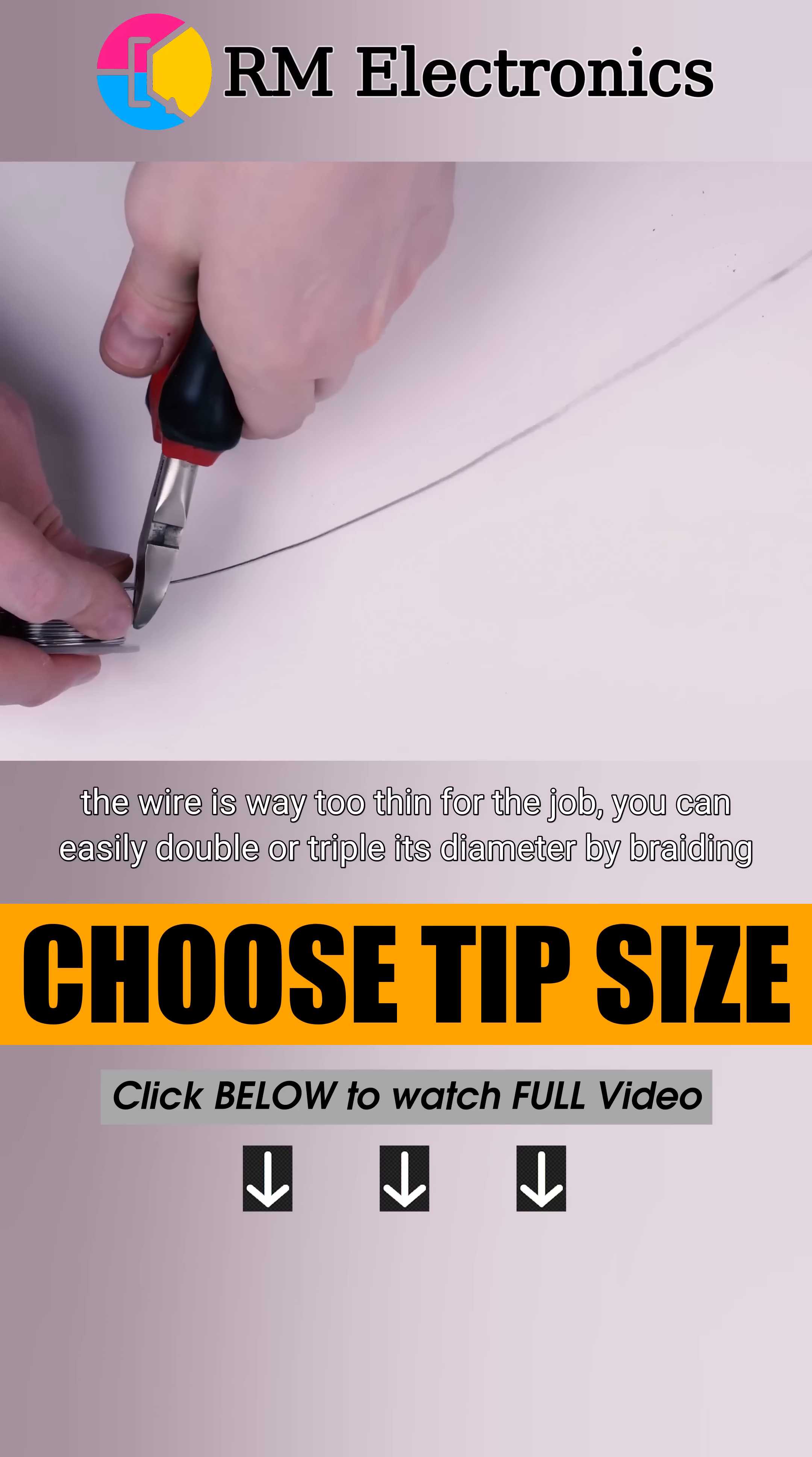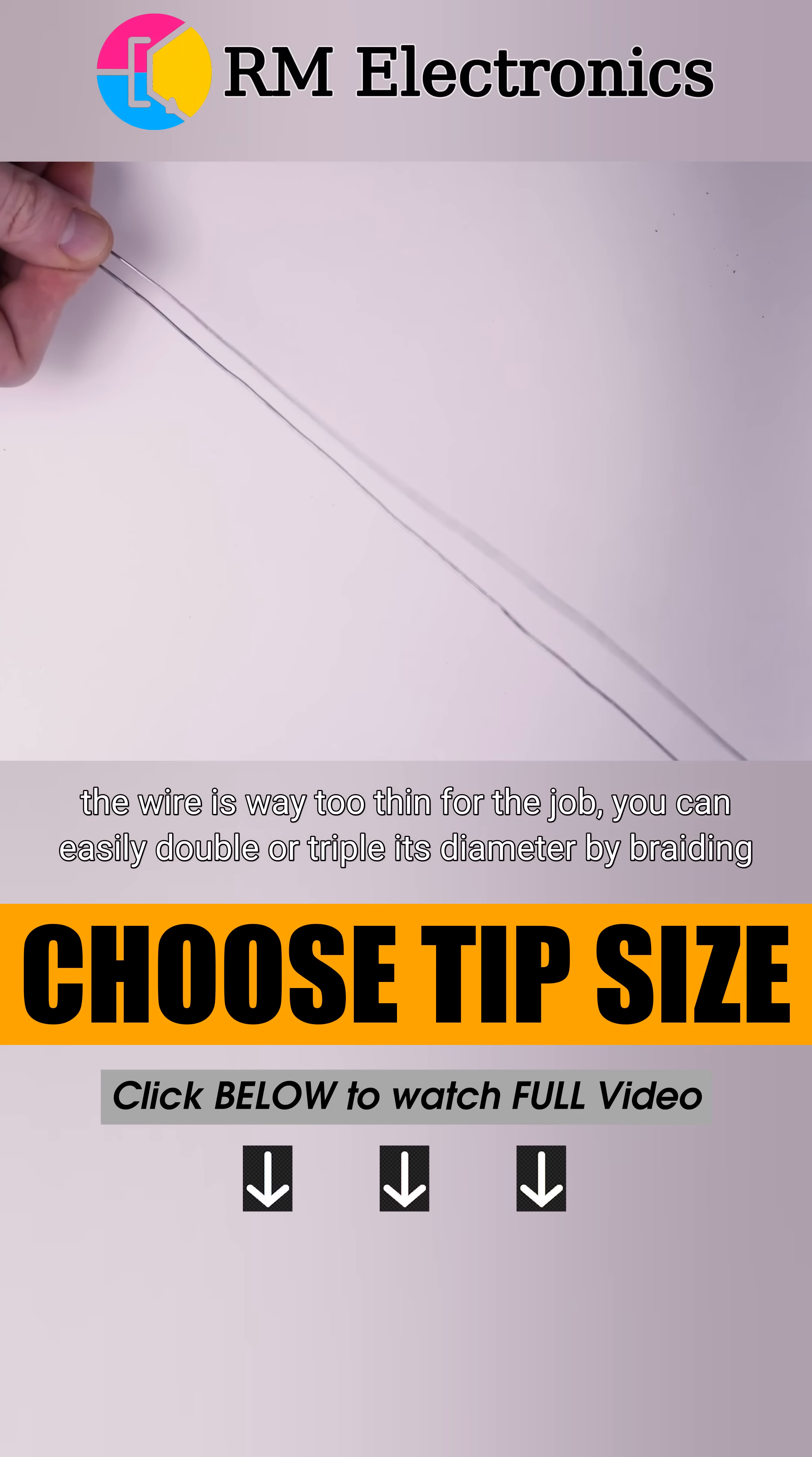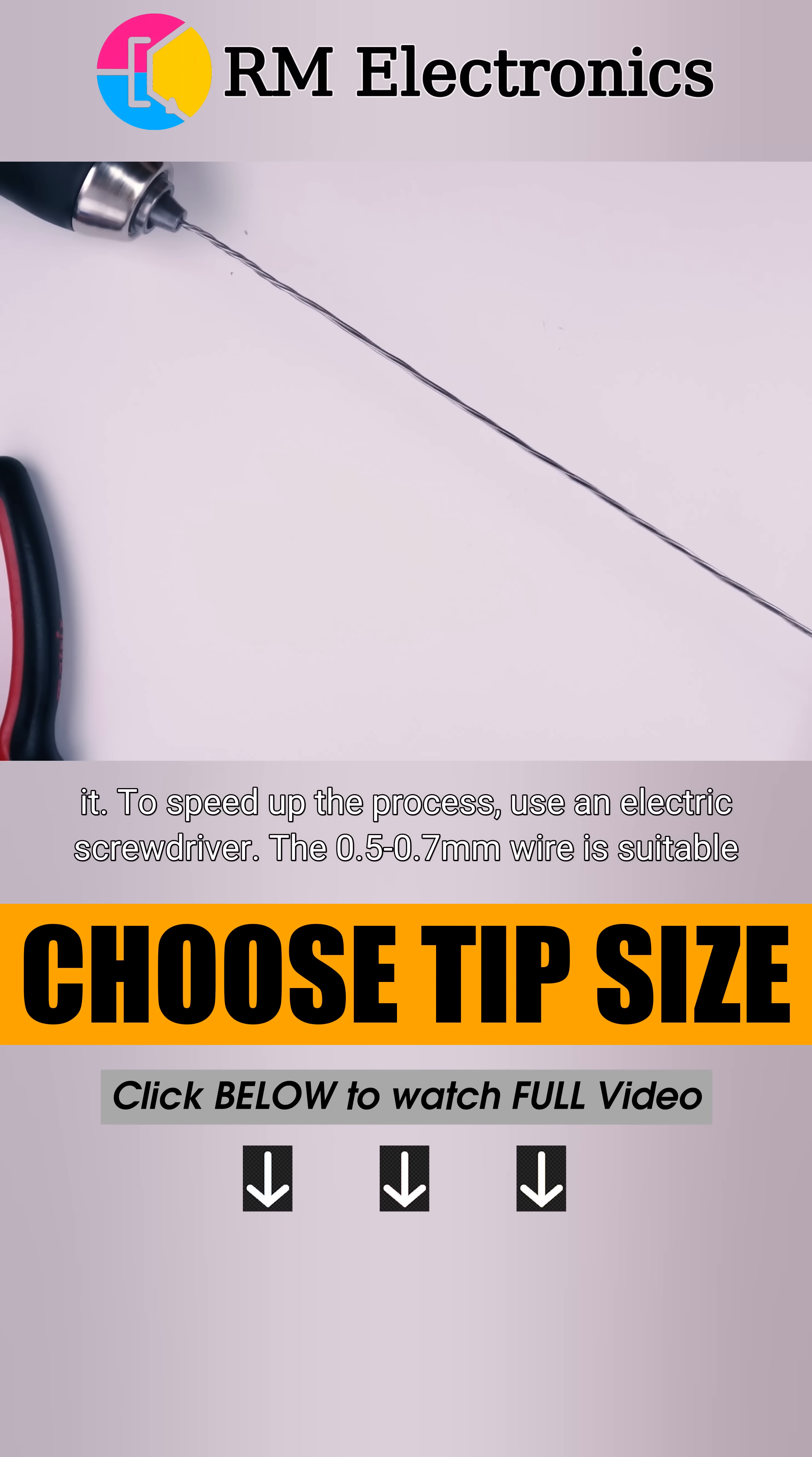If the wire is way too thin for the job, you can easily double or triple its diameter by braiding it. To speed up the process, use an electric screwdriver.